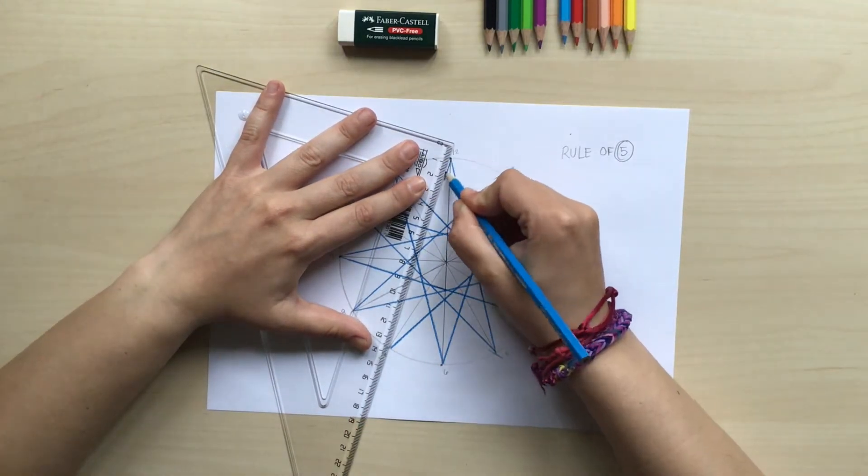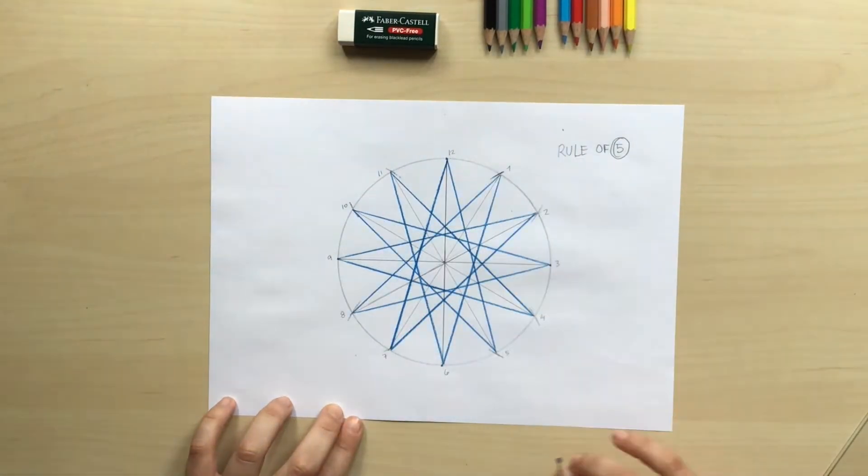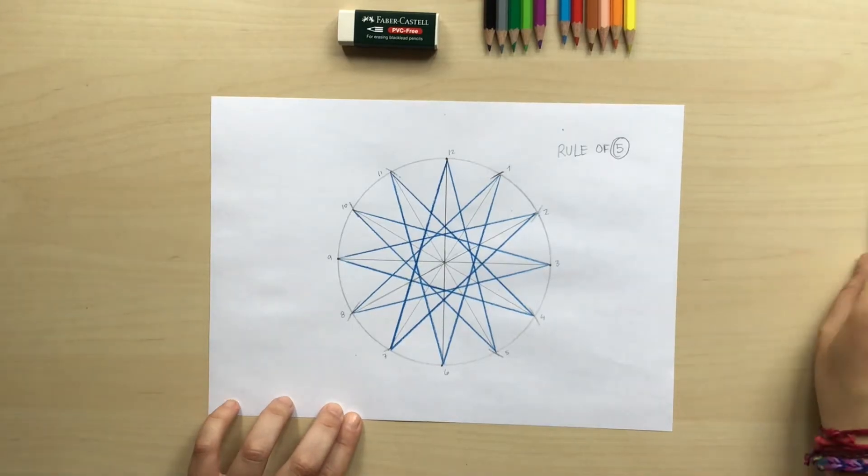And here we have a perfect star polygon of 12 sides that looks just beautiful.